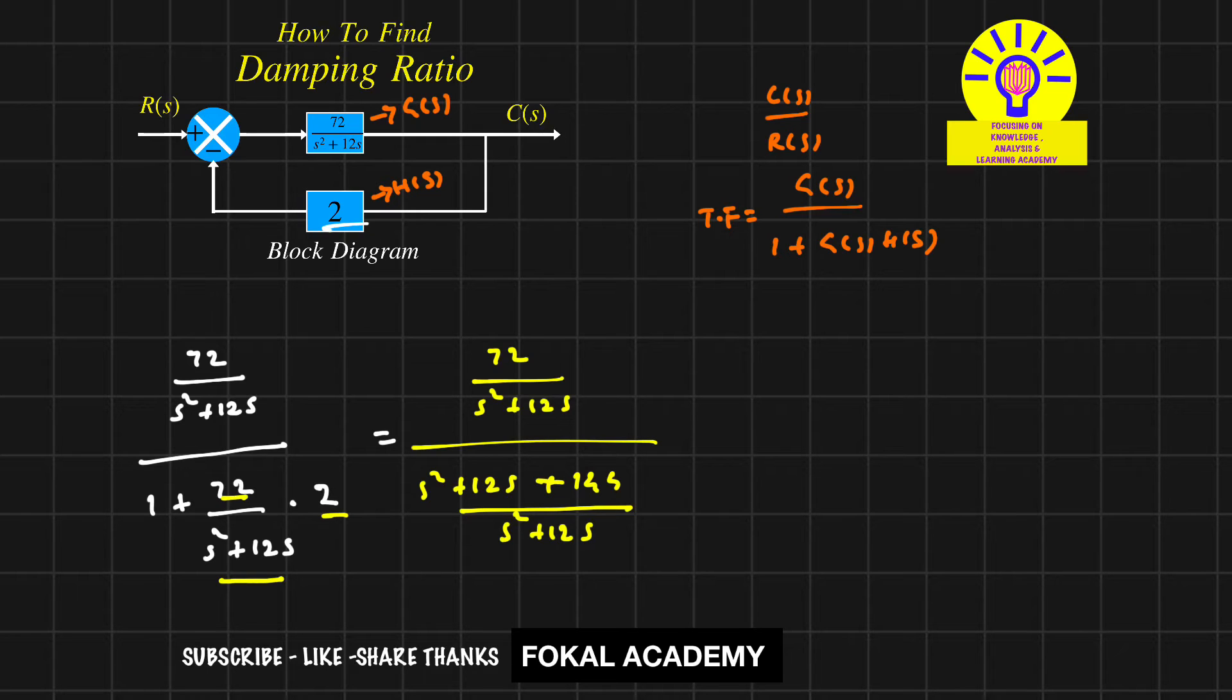These terms cancel out, giving us 72/(s² + 2s + 144). This is the required transfer function for the given block diagram. But here we want the damping ratio.